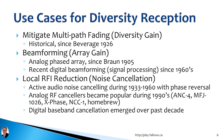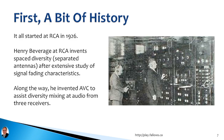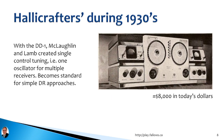So the three use cases for diversity reception in 2022 are: mitigating multipath fading, beamforming, and local RFI reduction. It all started at RCA in 1926 — Henry Beveridge, the guy in the suit on the right, invented space diversity after extensive study of signal phasing characteristics. Then 10 years later, Hallicrafters came up with the DD-1, which slaved the oscillators together for single-control tuning with diversity reception capability — worth about $8,000 in today's dollars.